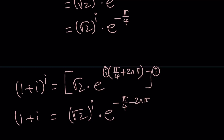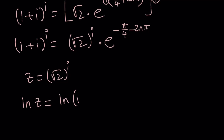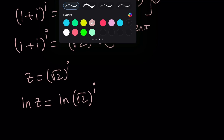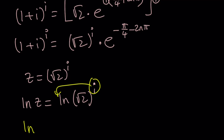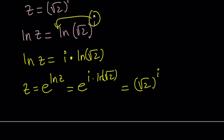Now, the million dollar question: what is square root of 2 to the power i? Let's call that z. Taking the natural log of both sides, we get ln z equals i times ln(√2). Since we want z and not ln z, we write z equals e to the power ln z, and substitute: z equals e to the power i times ln(√2). That's our expression for square root of 2 to the power i.